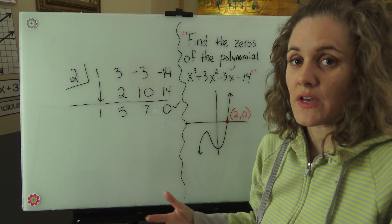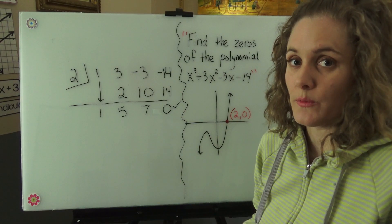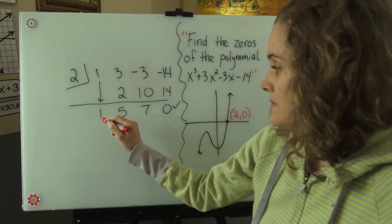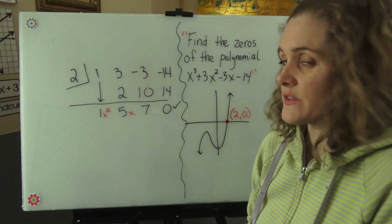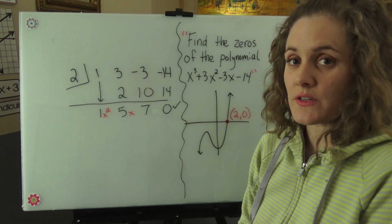Now we take our one, five, and seven and put them back together as a polynomial. This is our x squared term, this is our x term, and this is our constant.